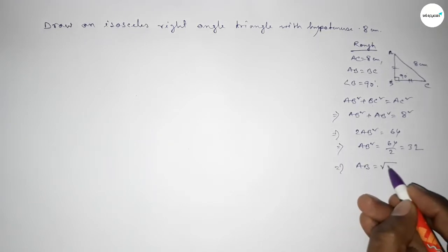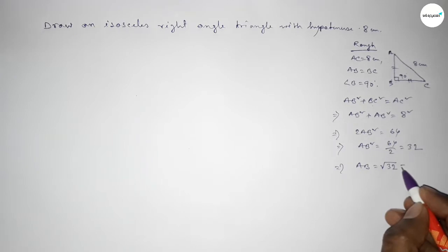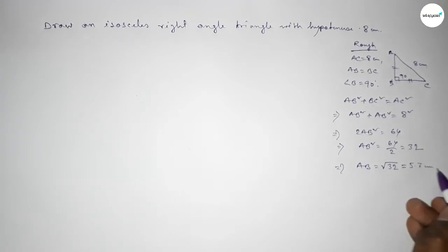Therefore AB equals root over 32, which is approximately 5.7 centimeter. So now we have to draw the triangle.